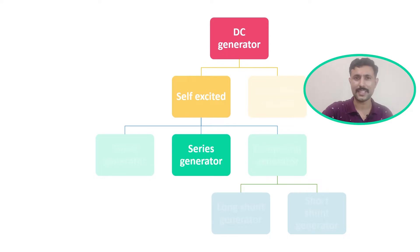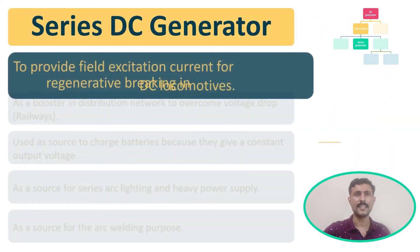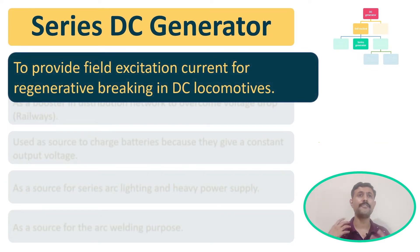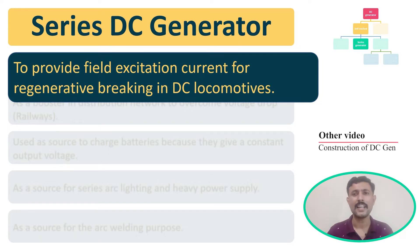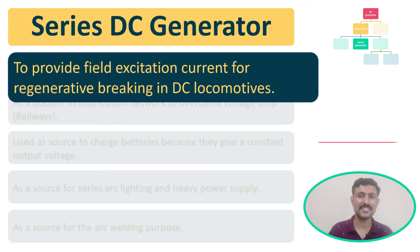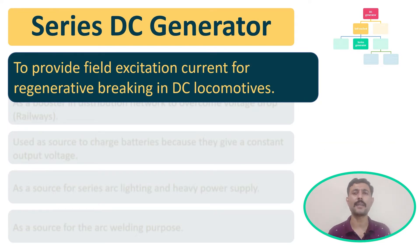The first application: the series DC generator is used to provide field excitation current for regenerative braking in locomotives. This is because the series DC generator has a tendency to provide large current, which is why it is suitable for this purpose.